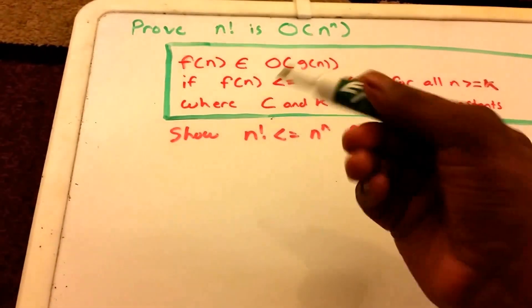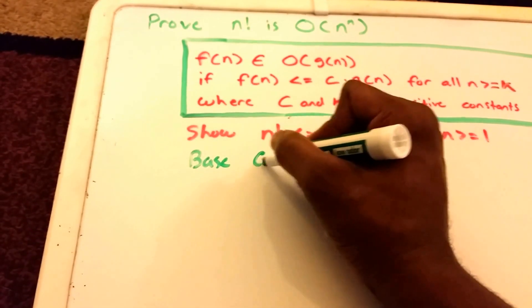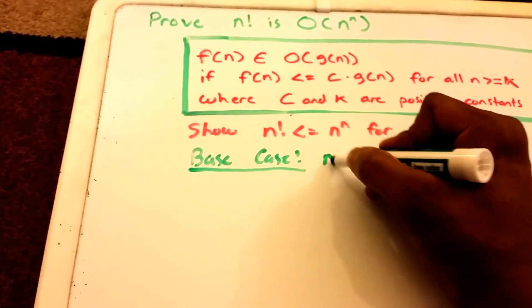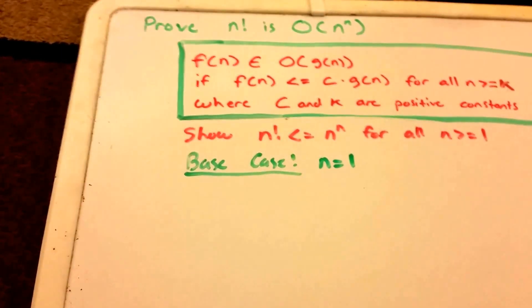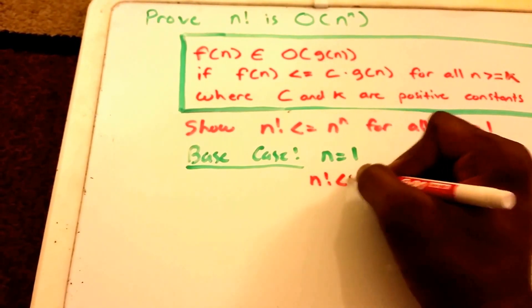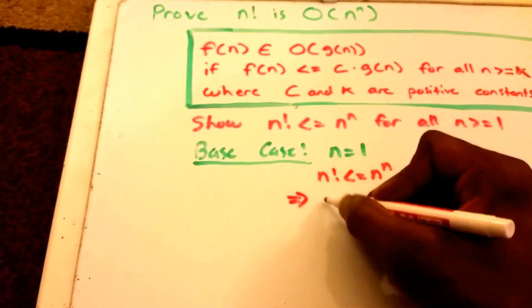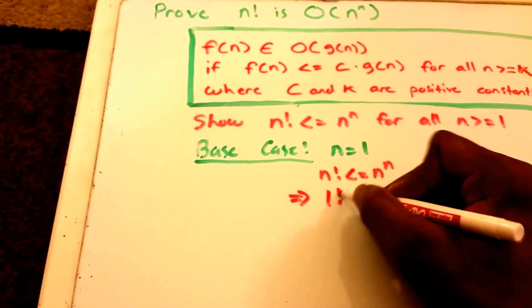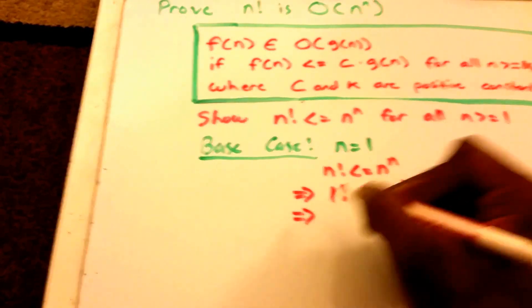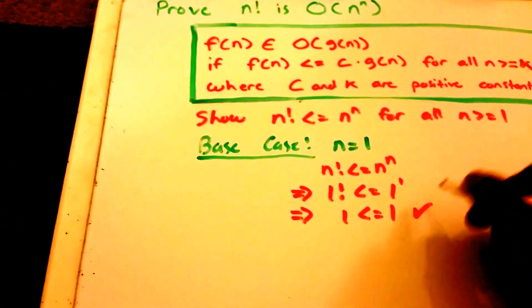First, we have our base case, and our base case is when n equals 1. We have n factorial less than or equal to n to the power of n, and when n equals 1 we get 1 factorial is less than or equal to 1 to the power of 1. This is equal to 1 less than or equal to 1, which is true.